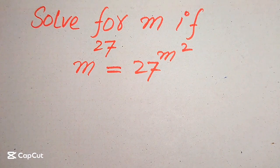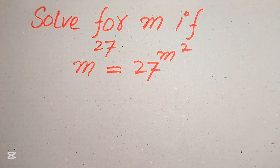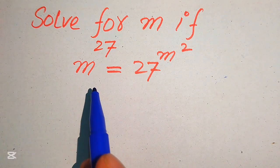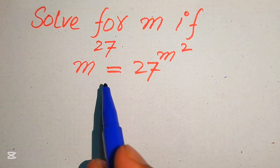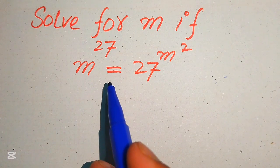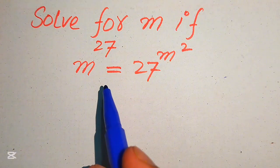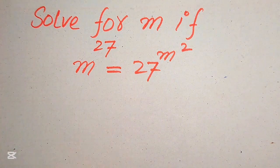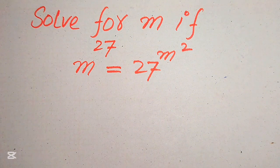Hello everyone. Today I want to show you how to solve this problem for the values of m. If we have m to the power of 27 equals 27 to the power of m squared, we solve this problem for the values of m.